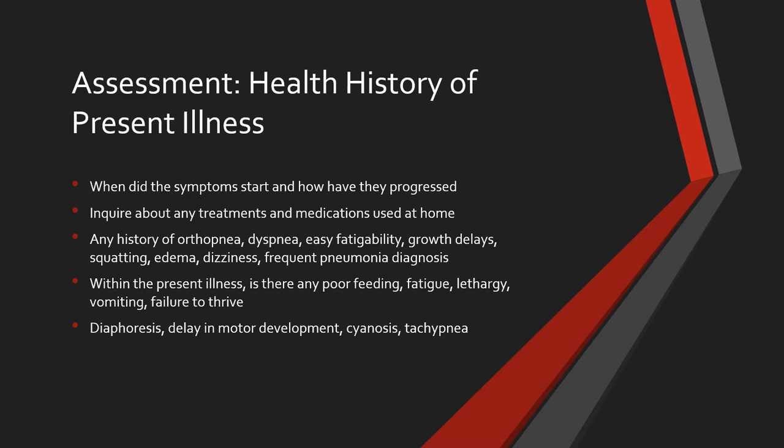Within the present illness, is there any poor feeding, fatigue, lethargy, vomiting, or failure to thrive? Parents may also report diaphoresis, a delay in motor development, cyanosis, and tachypnea. That's going to give us a really great health history of the present illness.